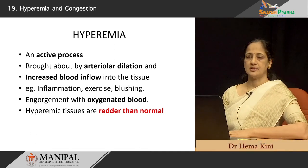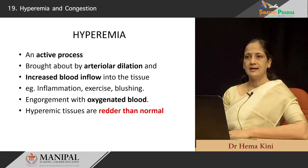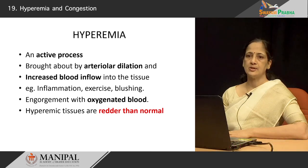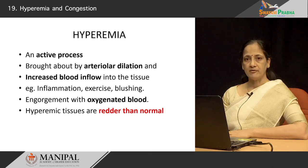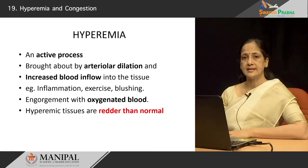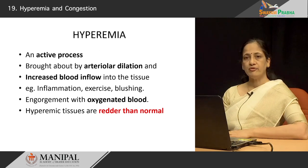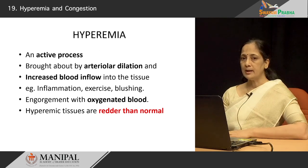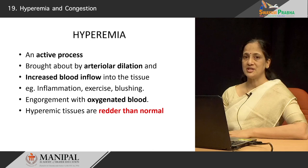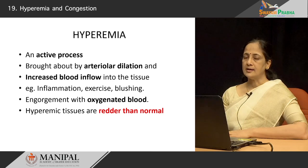Hyperemia is an active process that is brought about by arteriolar dilatation, and that allows increased blood to come into the tissue. This occurs in inflammation, as you would have learned. It also occurs in exercise where more blood is required by the skeletal muscle, and arteriolar dilatation permits more blood to flow into the tissue. A simple physiological mechanism of blushing also occurs by this same mechanism, where increased blood flow occurs into the arterioles in the cheek tissue.